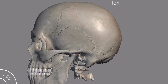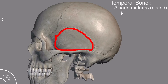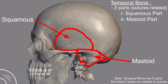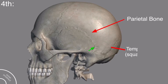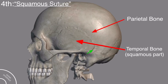Before discussing the next suture, you should know about the temporal bone — it has two parts: the squamous part and the mastoid part. The suture present between the parietal bone and the squamous part of the temporal bone is called the squamous suture, because both this part of the parietal bone and this part of the temporal bone are squamous in nature.